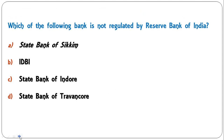Which of the following banks is not regulated by the Reserve Bank of India? Options are State Bank of Sikkim, IDBI, or State Bank of Indore. The correct answer is A — State Bank of Sikkim, because this bank was established under the Royal Proclamation of the Chogyal, and falls under the provision of Special Article 371F, which keeps it outside the purview of the Banking Regulation Act.